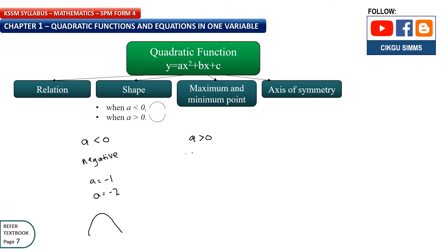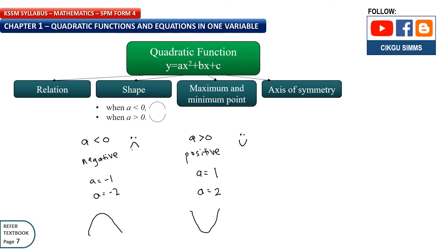For a greater than 0, this means a is a positive number — for example, a equal to 1, 2, 3, 4, 5, or 6. The shape will be like this. To make it easy to remember: for a greater than 0, positive is a smiley face, so the shape opens upward like a smile. If a is negative, it's a sad face, so the shape opens downward.